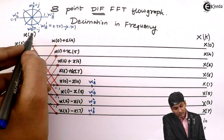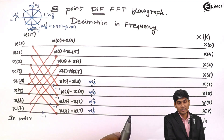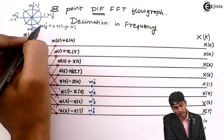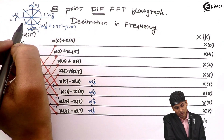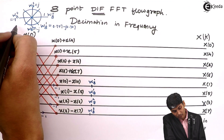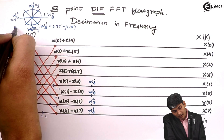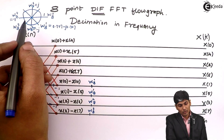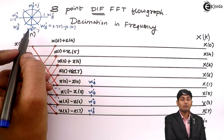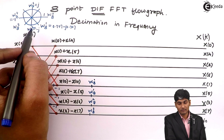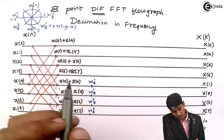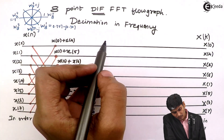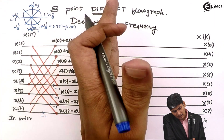From this circle we can easily get W8^0, W8^1, W8^2, and W8^3, where W8^3 = 0.707 − j0.707.